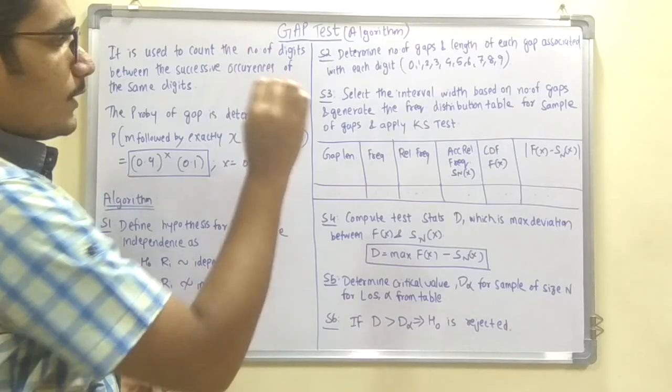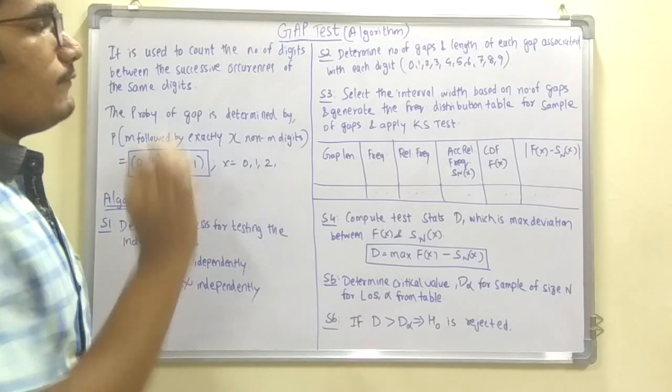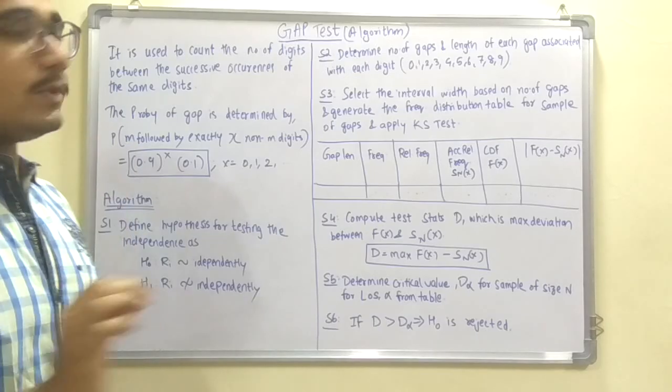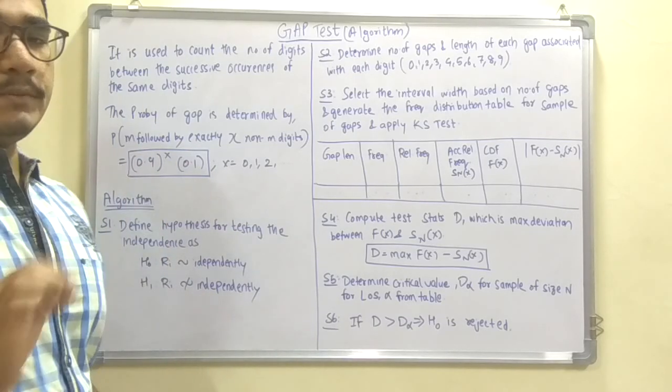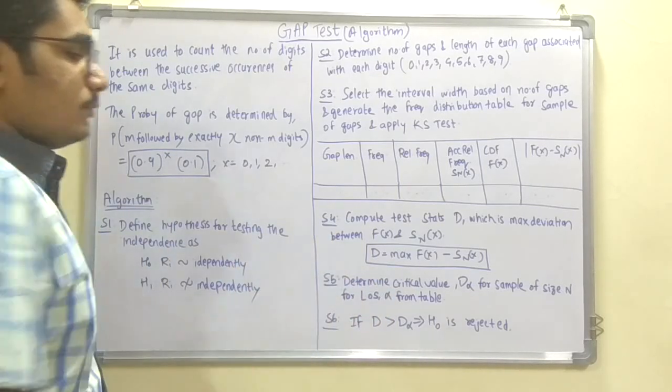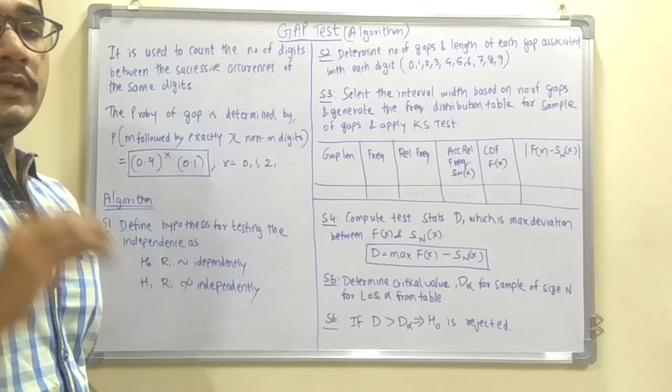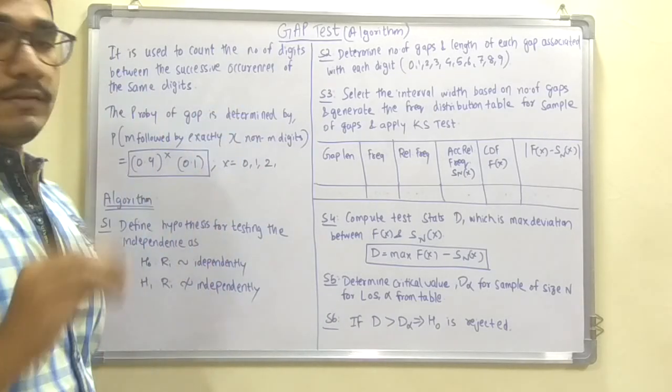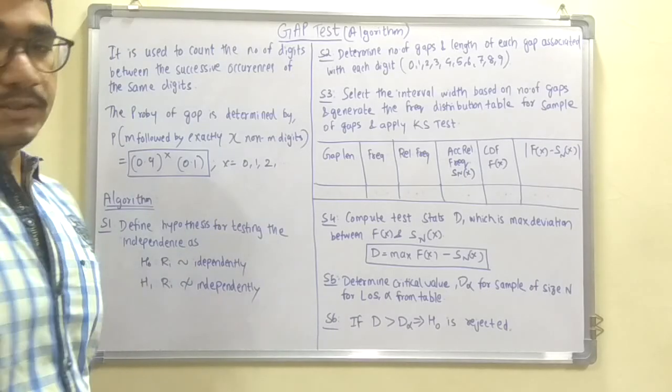Next step is to determine the number of gaps and the length of each gap associated with each of the digits, that is 0, 1, 2, 3, up till 9. This will take a tedious amount of time. You have to calculate carefully because any mistakes will give the wrong answer and the hypothesis may change. You have to carefully investigate when the next gap or next digit occurs.